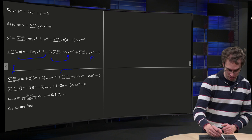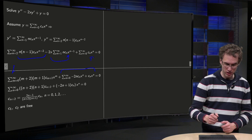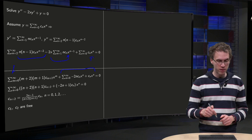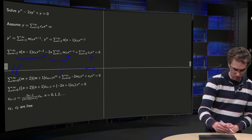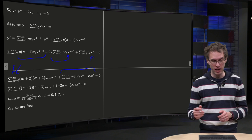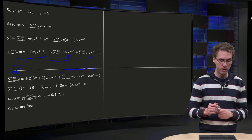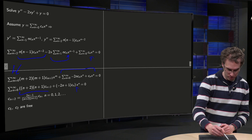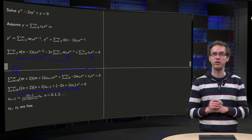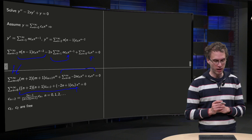So we get for this term -2n cn times x to the power n. Then over here we can rename in this power series over there m = n, and then we obtain one power series just with x to the power n, and a whole mass here with the coefficients = 0 on the right hand side.